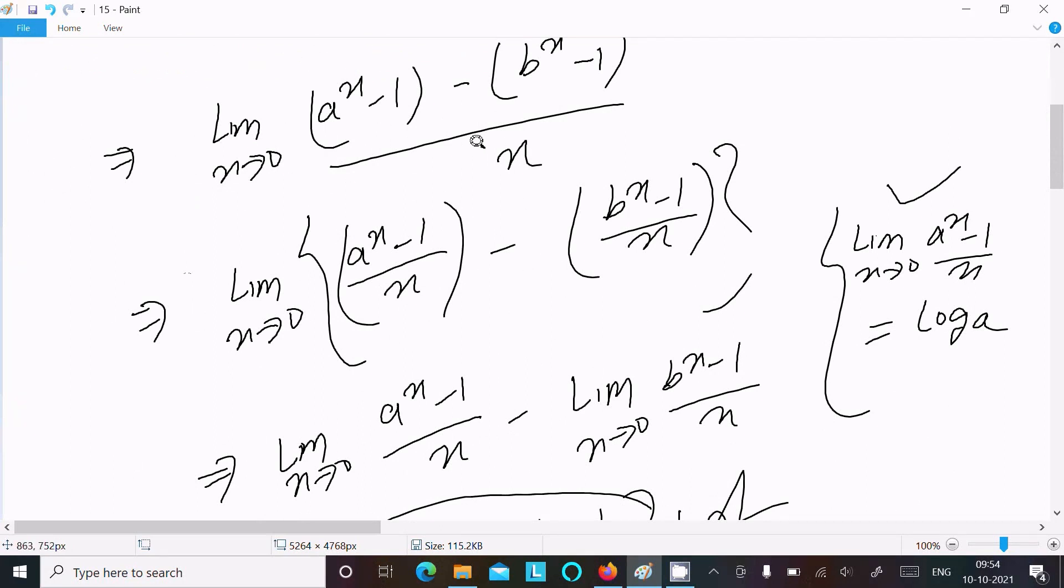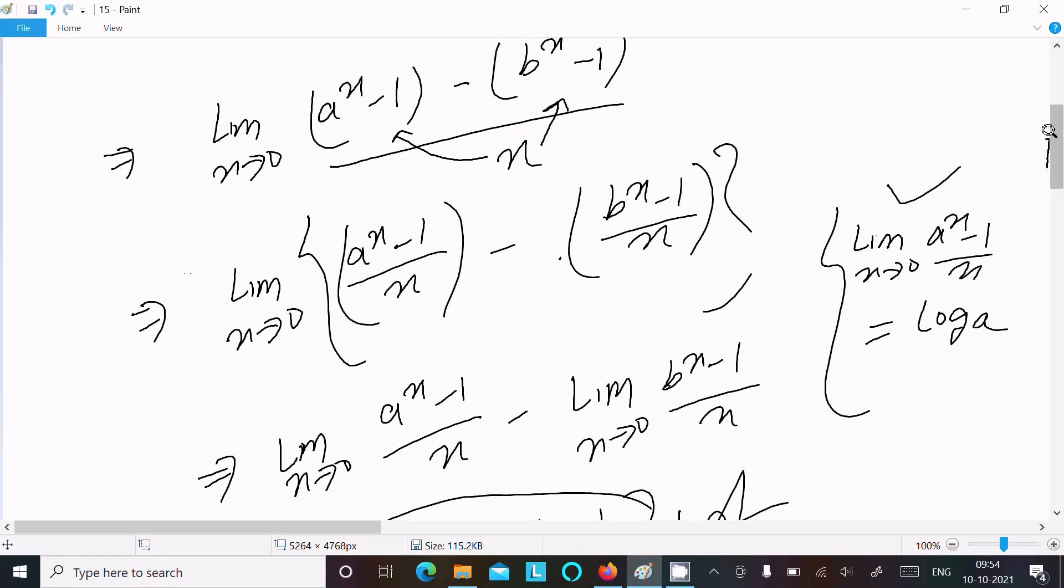Let's make the relationship with x to this one and that one. So you can write this or if you want then you can write the limit here and here and use this formula then you can get the answer log a minus log b. So this is the way we can find the limit of this question.